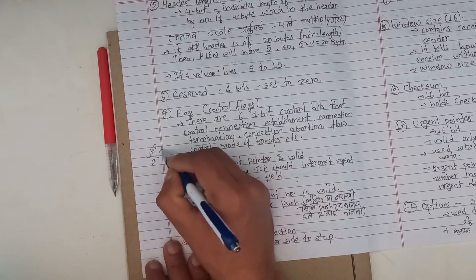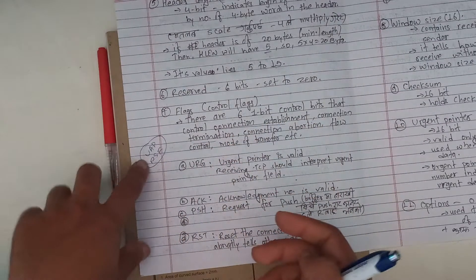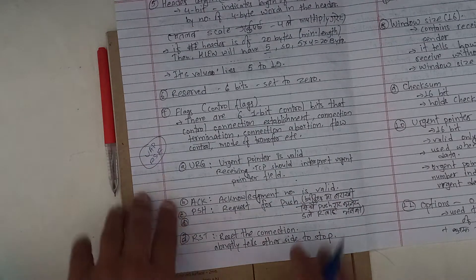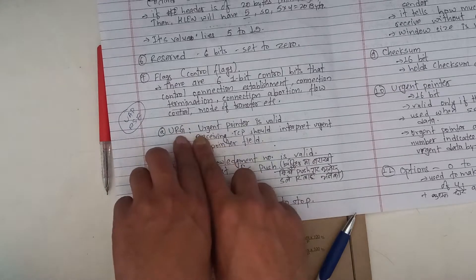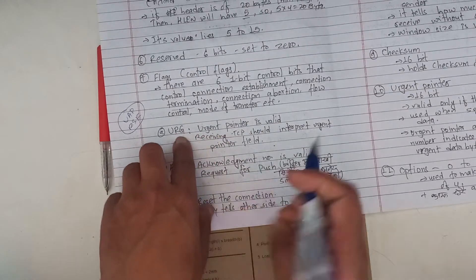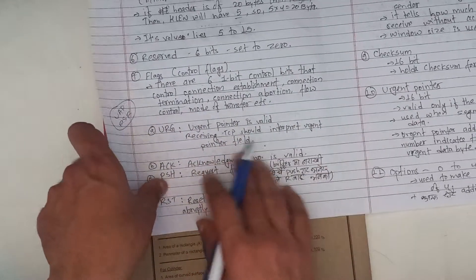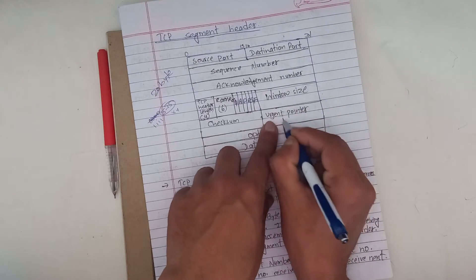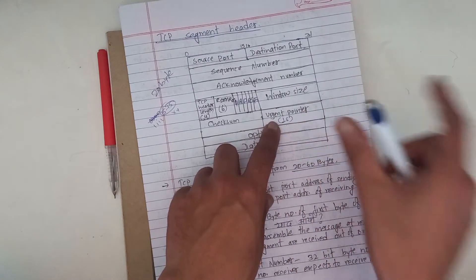Remember UAP RSF — these are the 6 flag bits. U is the URG flag — the urgent flag means the urgent pointer is valid. The URG flag is used to signal that the receiving TCP should interpret the urgent pointer field. The urgent pointer field is 16 bits.